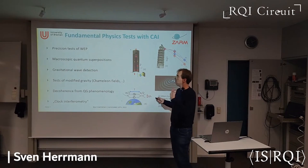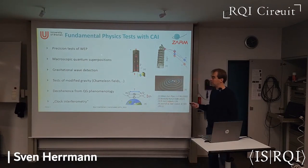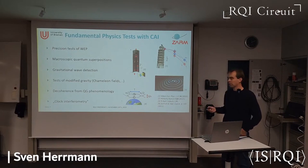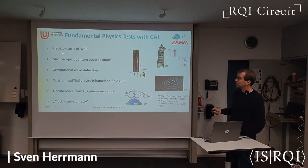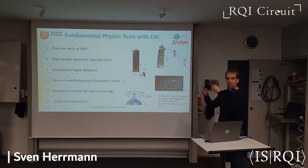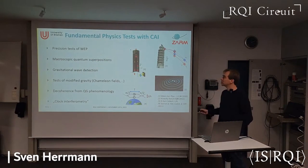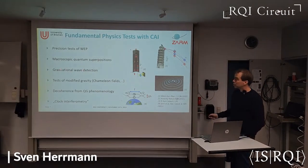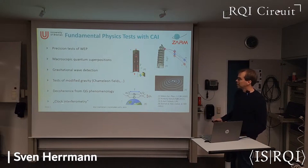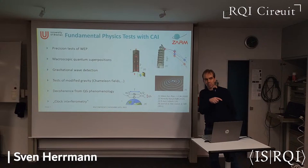There are also fundamental physics applications. You can use atom interferometers to do precision tests of the universality of free fall by comparing two species. You can look at macroscopic quantum superpositions — Mark Kasevich's group created a superposition with 50 centimeters separation in a 10-meter setup. There are plans to use them in gravitational wave detectors. Tests of modified gravity and chameleon fields have been done. And clock interferometry has also been mentioned — I'll say something brief about that later.